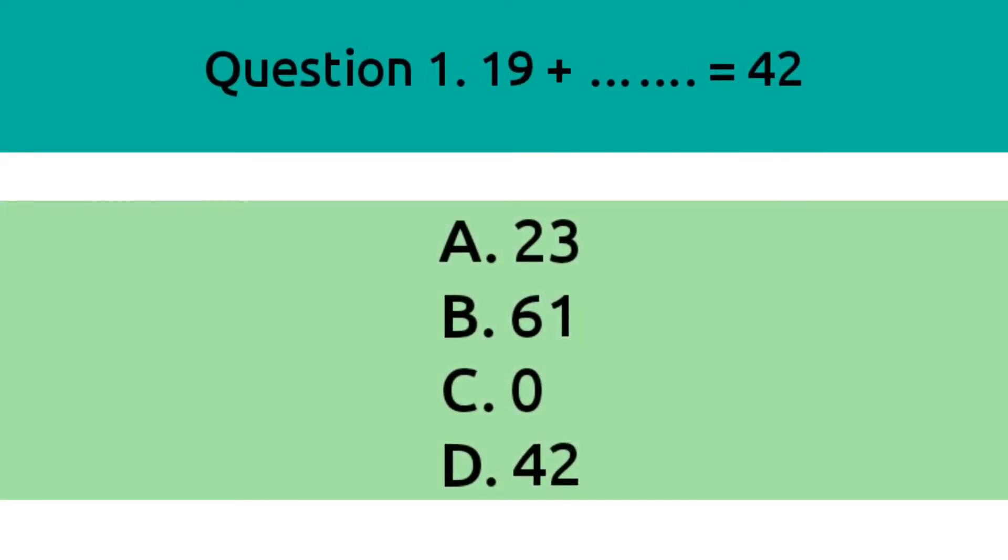Question 1. 19 plus dash equals to 42. Option A, 23. Option B, 61. Option C, 0. Option D, 42. The correct answer is Option A, 23.